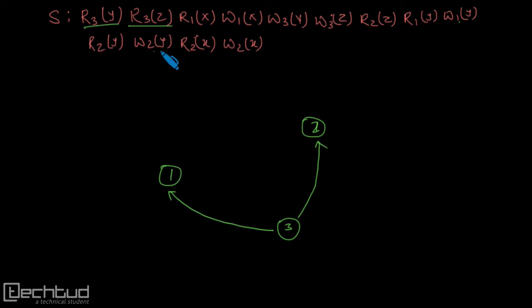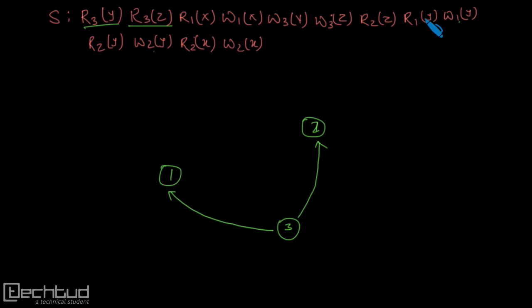This operation is r3z. So let us look for z. Here it is z but the transaction is the same, and the other operation is read-read. No other z. So no conflict.